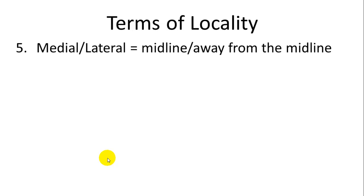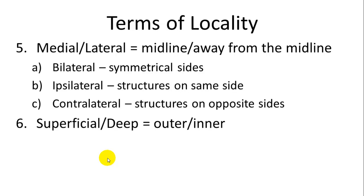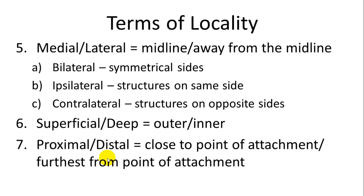Some more terms for locality. Medial means towards the middle. Lateral means away from the middle. You can have bilateral, which would mean you have two sides which are exactly the same in shape. If you cut somebody down a mid-sagittal cut, it would create bilateral sides, the right and left. Ipsilateral are structures on the same side. Your right arm and your right leg are ipsilateral. Contralateral would be on the opposite side. Your right arm and your left leg are contralateral to each other. Superficial means towards the outside. Your skin is superficial. Deep is on the inside. Your bones are deep compared to your skin. Proximal means close to the point of attachment. Distal means away. Your fingers are distal to your shoulder joint. Your elbow is proximal to your shoulder joint.